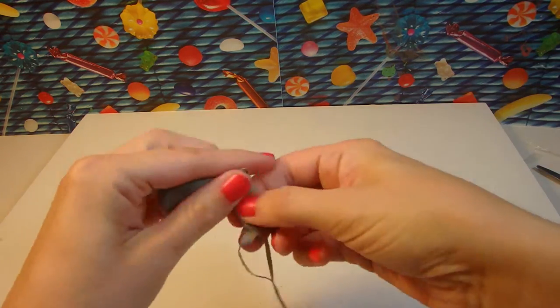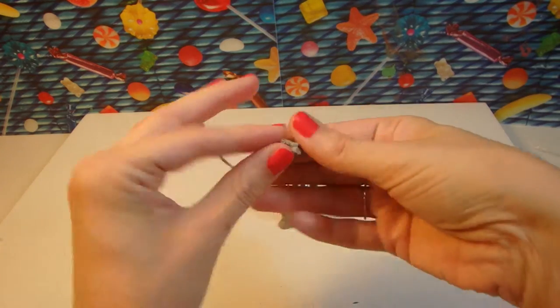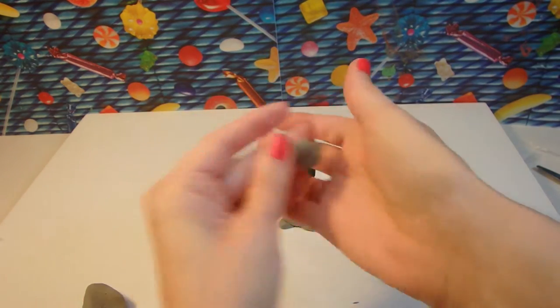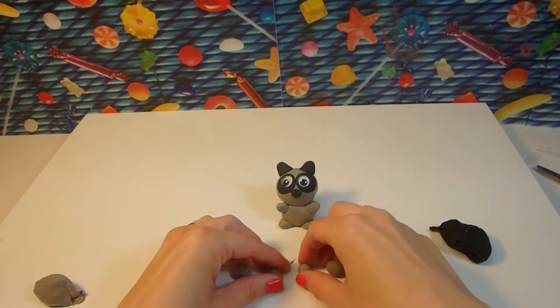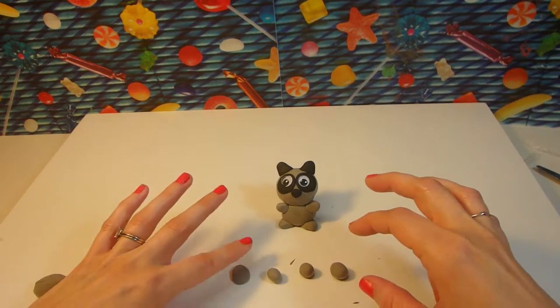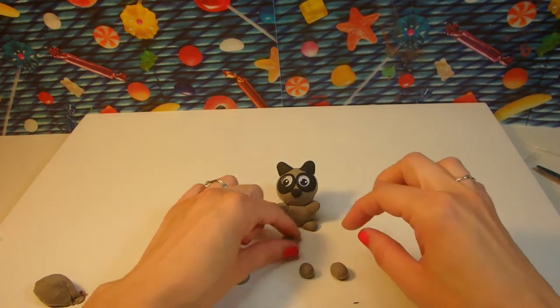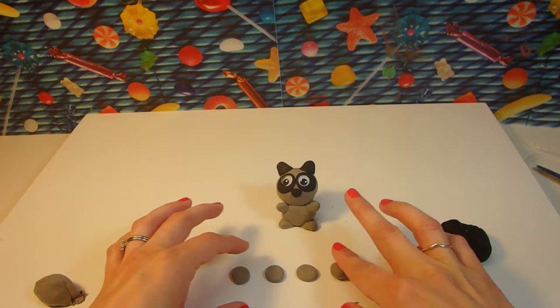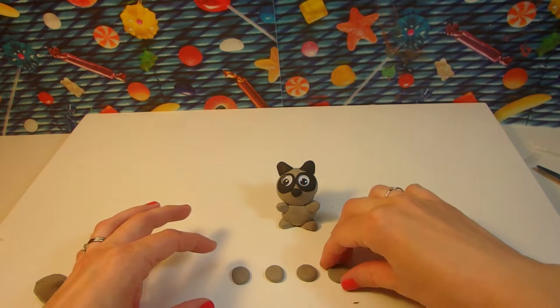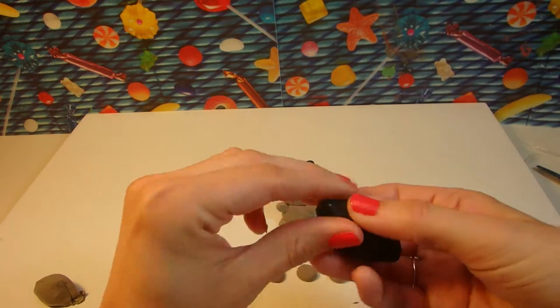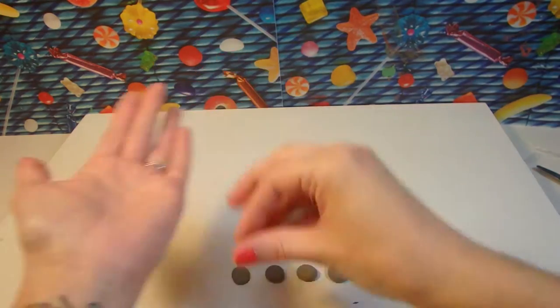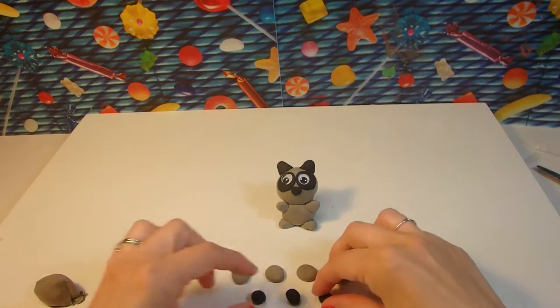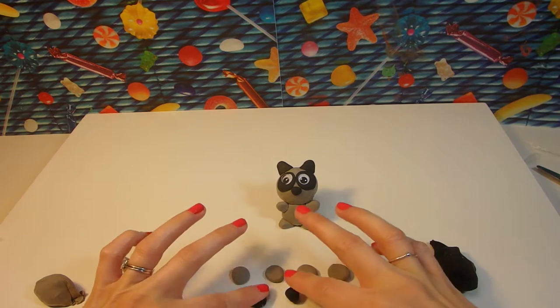So I'm going to make four balls of grey. Like that. And I'm going to smush them down into little pancakes. And I'm going to take the black clay and make three little balls of black. And we're going to smush those down into little pancakes too.